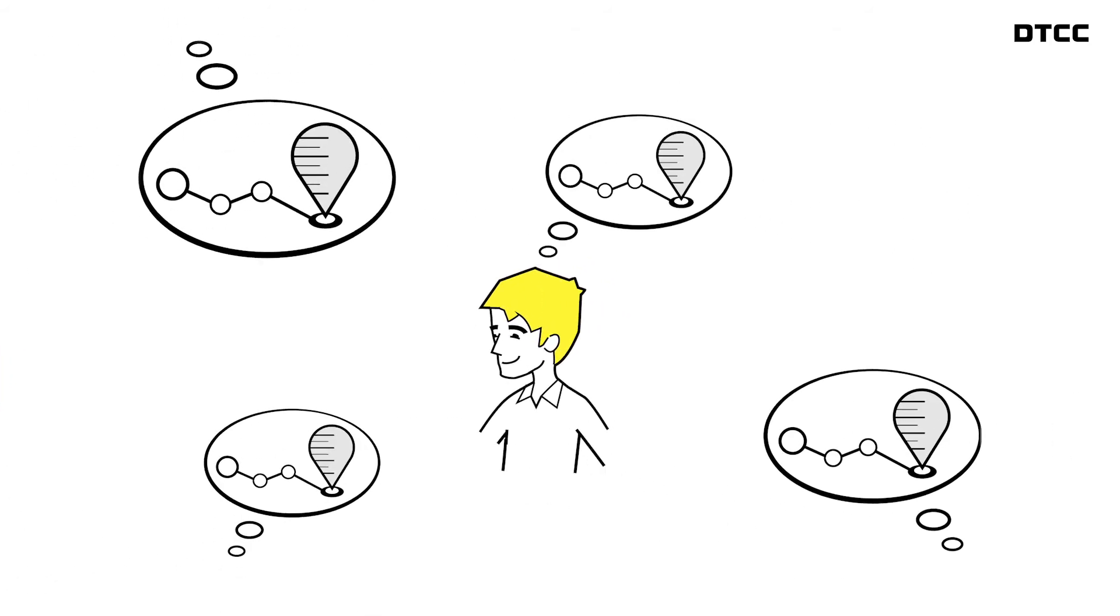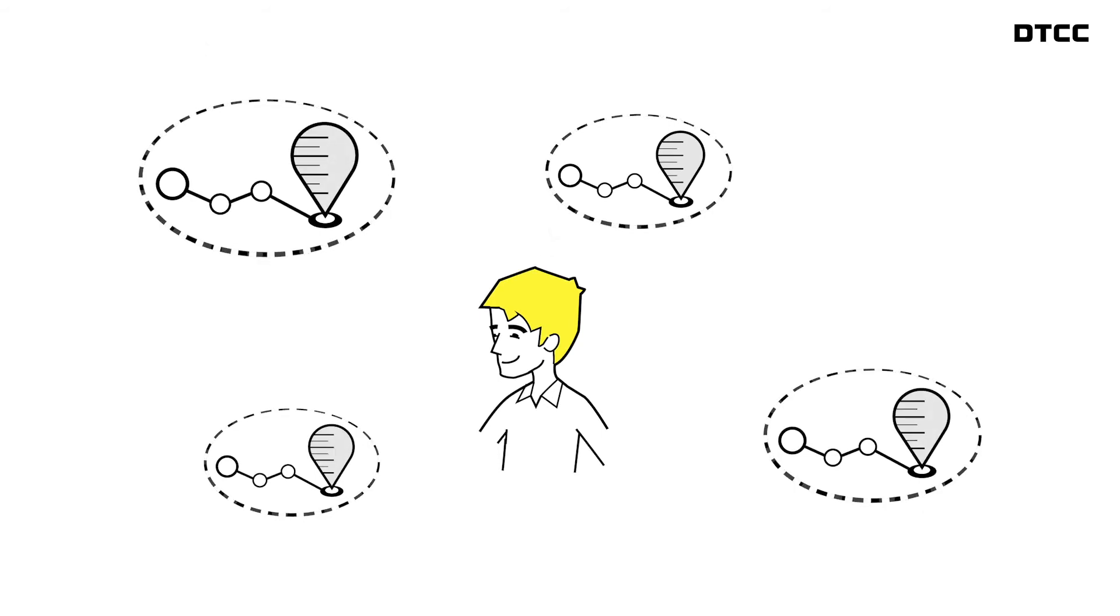But no matter where you sit, OKRs should be transparent so everyone in a tribe or department knows what everyone else is working on. This also promotes accountability.